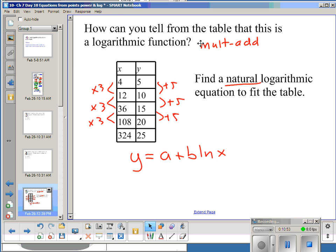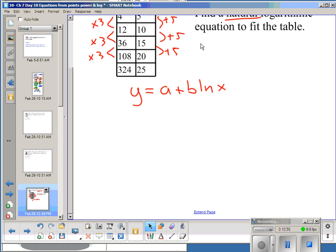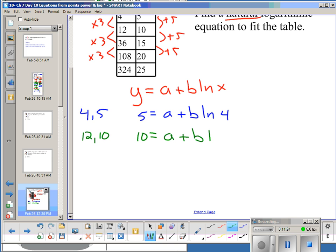All right, again, I have two things I need to find. I need to find A and B. So I need to use two points. So we could use our first two points. We have the point 4, 5, and I have the point 12, 10. So if I start with the point 4, 5, my Y is 5, A is what I'm looking for, B is what I'm looking for, and X is 4. And our second equation, I can write Y is 10, A is what I'm looking for, B is also what I'm looking for, and X is 12.